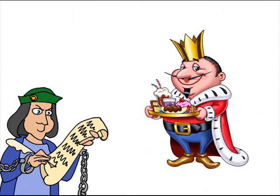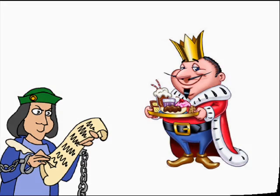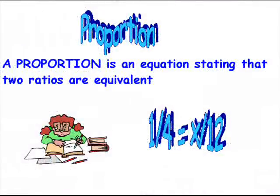Now the king and his mathematician were faced with the task of figuring out how much of each person's possessions he was entitled to. He looked to his loyal mathematician to figure out what of all the things he was entitled to. The king and his mathematician defined a proportion as an equation stating two ratios are equivalent. This is a lot like equivalent fractions.